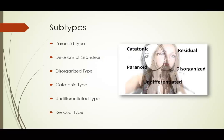The undifferentiated type simply means it doesn't fit into any specific category. The residual type is used for people who have suffered at least one episode of schizophrenia but do not now show any prominent positive symptoms such as hallucinations, delusions, or disorganized speech or behavior. They will mostly show just negative symptoms, like flat affect.